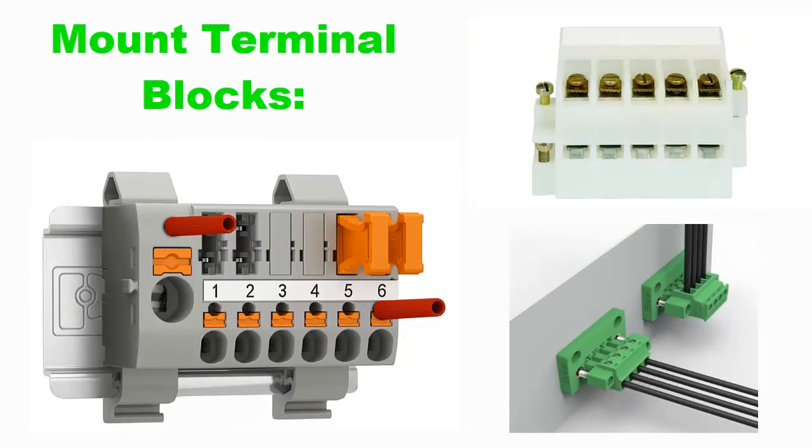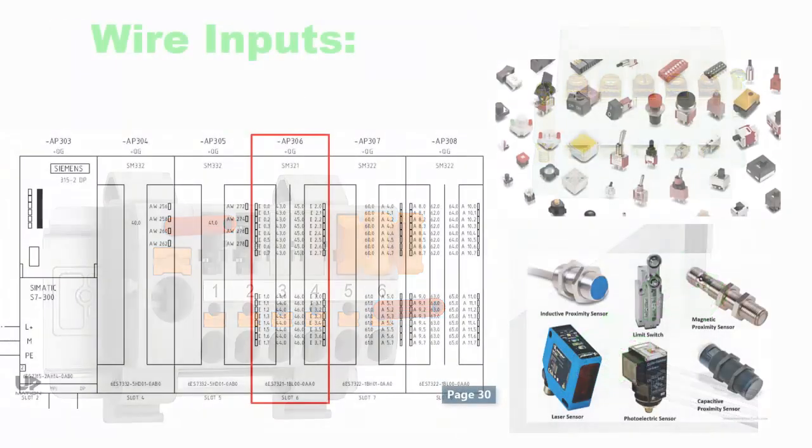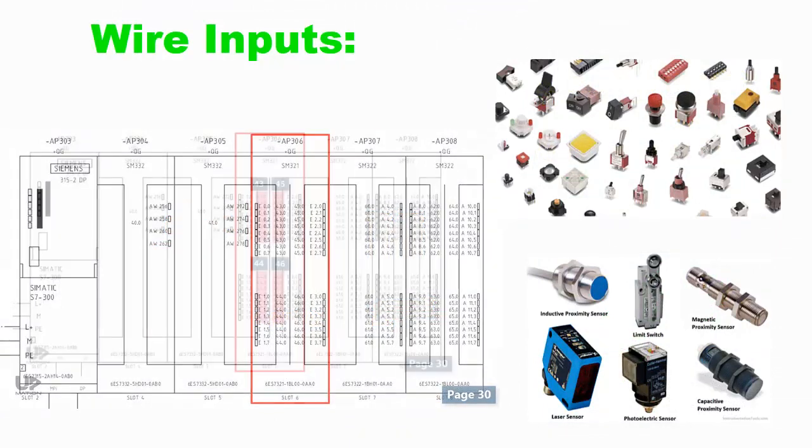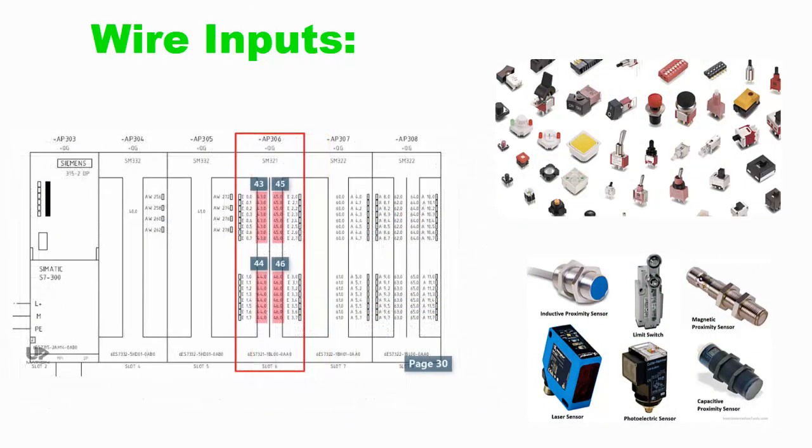Mount terminal blocks: Attach terminal blocks on the DIN rail for both input and output connections. Label each terminal block for clarity. Wire inputs: Connect input devices, sensors, switches, etc., to the appropriate terminal blocks.